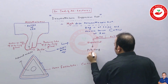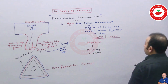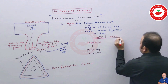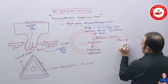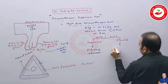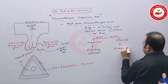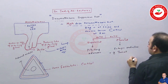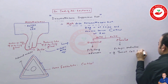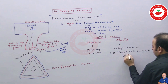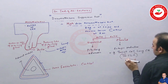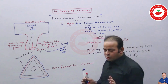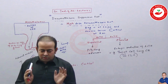If ACTH is suppressed with high dose dexamethasone, the most likely cause is a pituitary adenoma. If ACTH remains elevated even after high dose dexamethasone, it means the ACTH is coming from an ectopic site — this is called ectopic production of ACTH, mainly seen in small cell lung carcinoma. This lung cancer, commonly affecting smokers, produces ACTH ectopically, leading to Cushing syndrome.